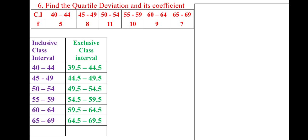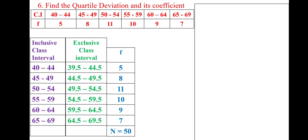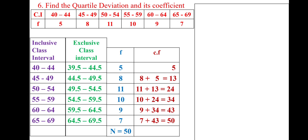To convert inclusive to exclusive class intervals, subtract 0.5 from the lower limit of each class and add 0.5 to the upper limit. So we get the exclusive class intervals. Frequency is written as it is: 5, 8, 10, 11, 9, 7. Total N equals 50. Then cumulative frequency: first value as it is (5); 8 + 5 = 13; 11 + 13 = 24; 10 + 24 = 34; 9 + 34 = 43; 7 + 43 = 50.